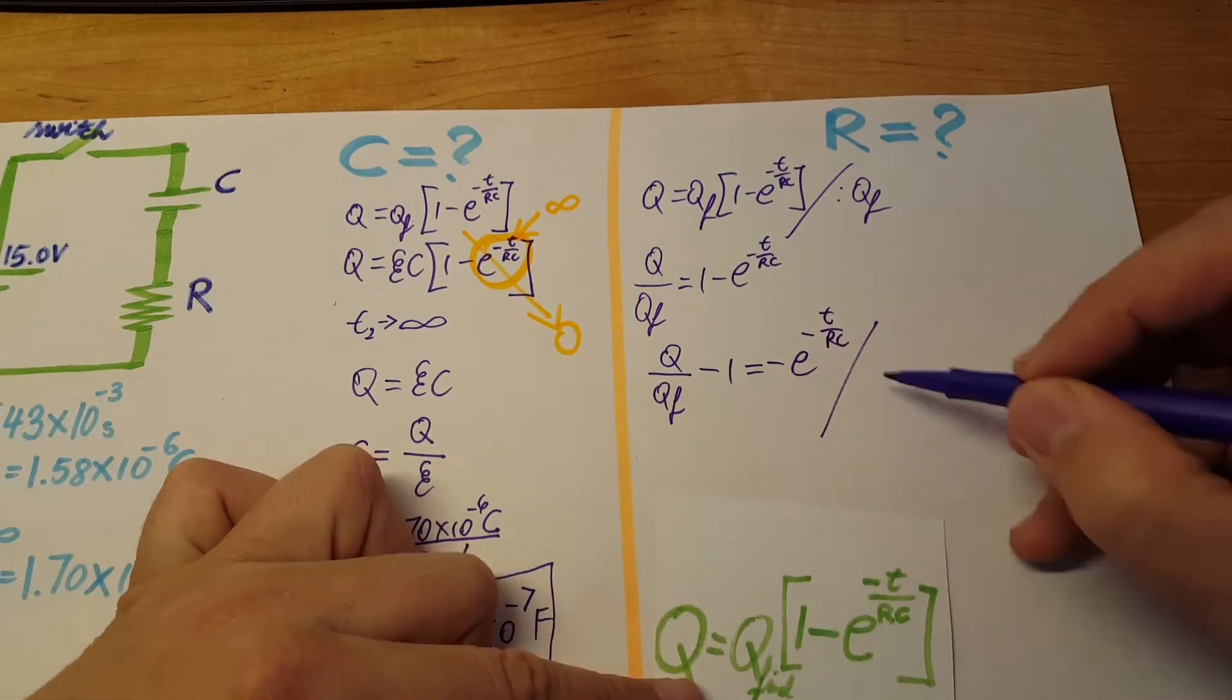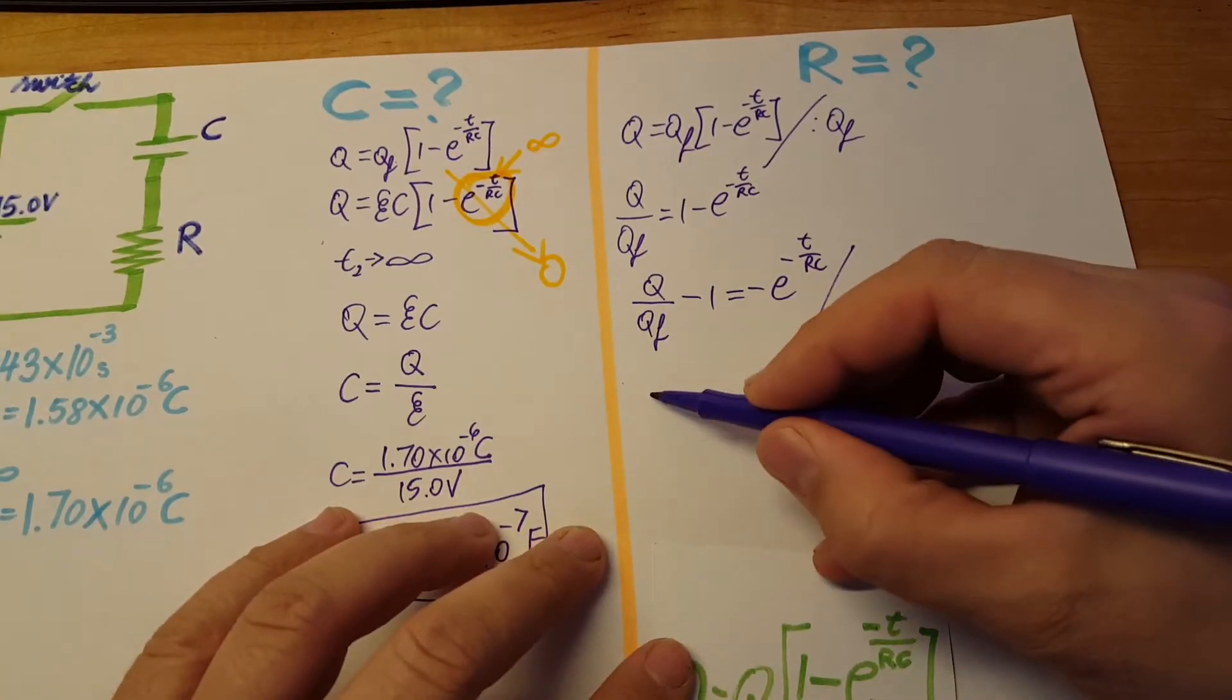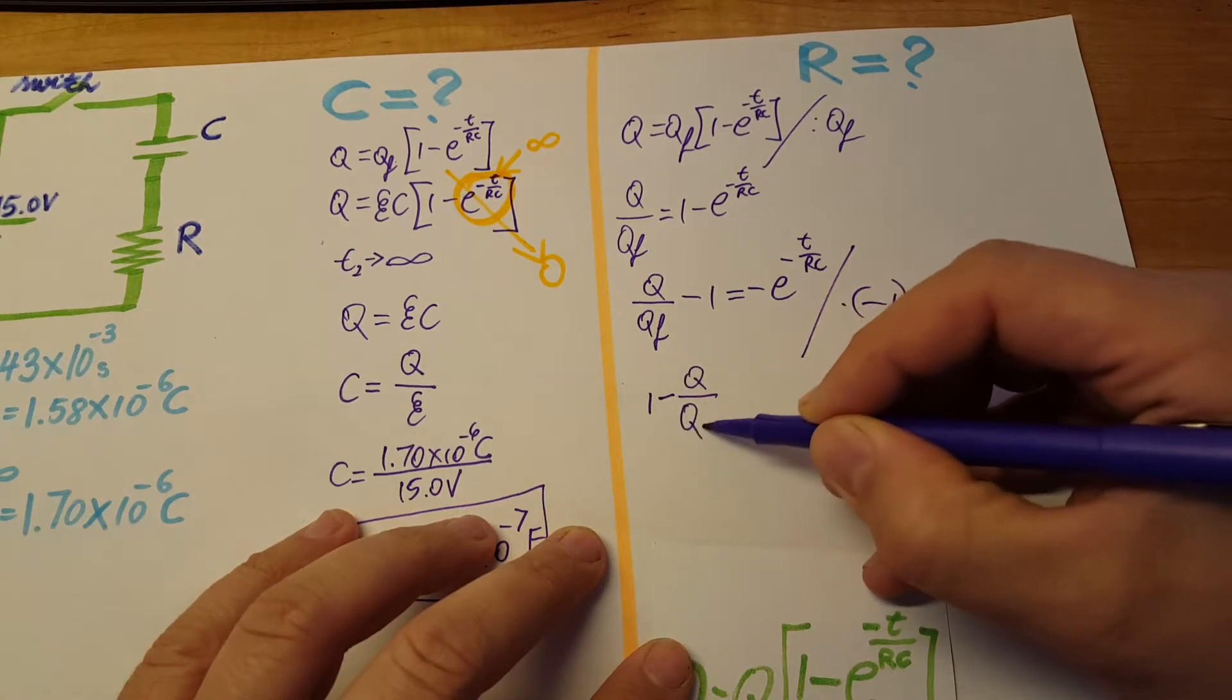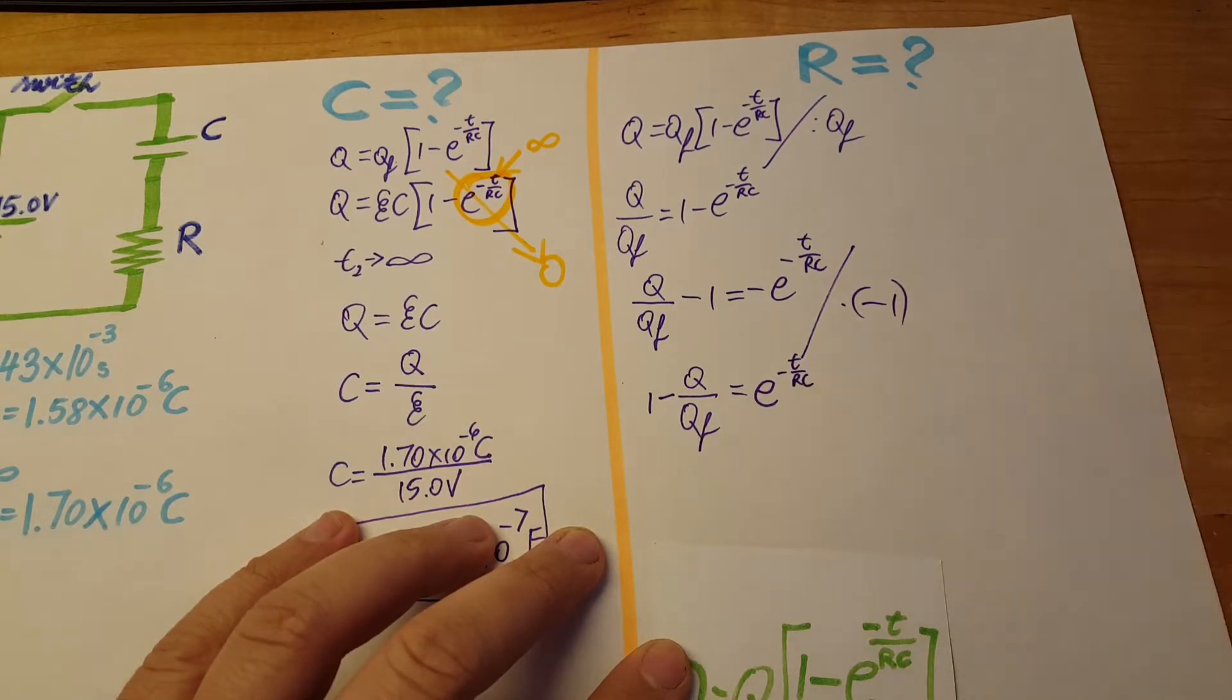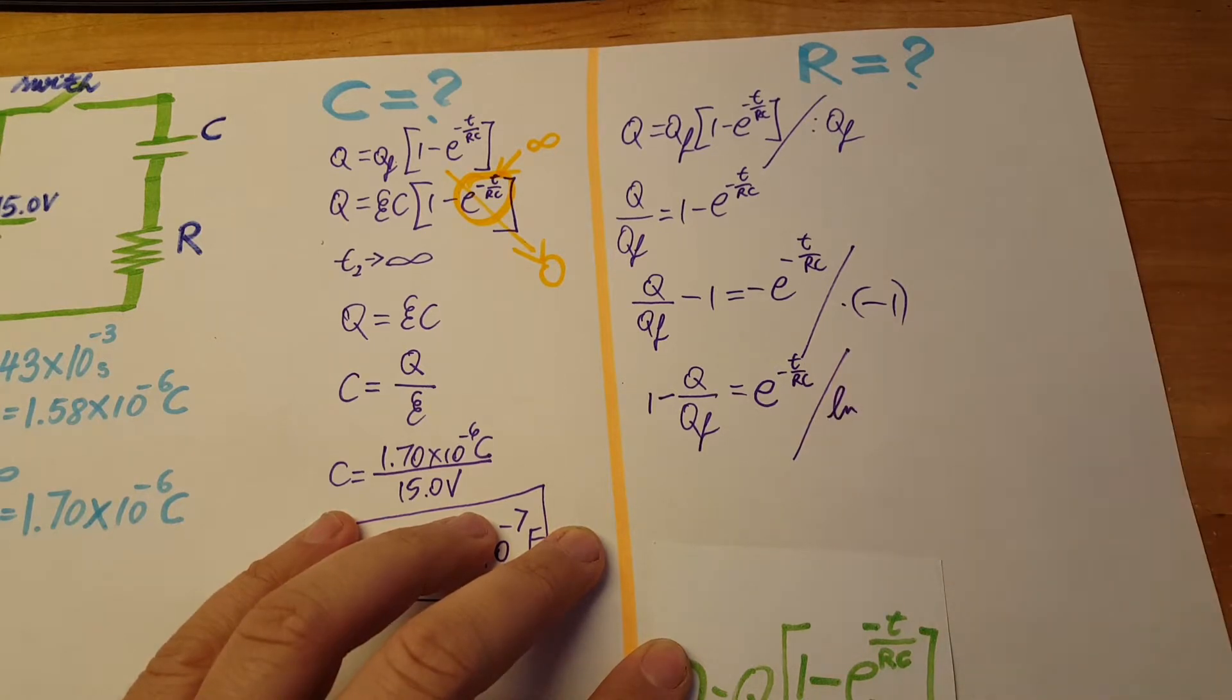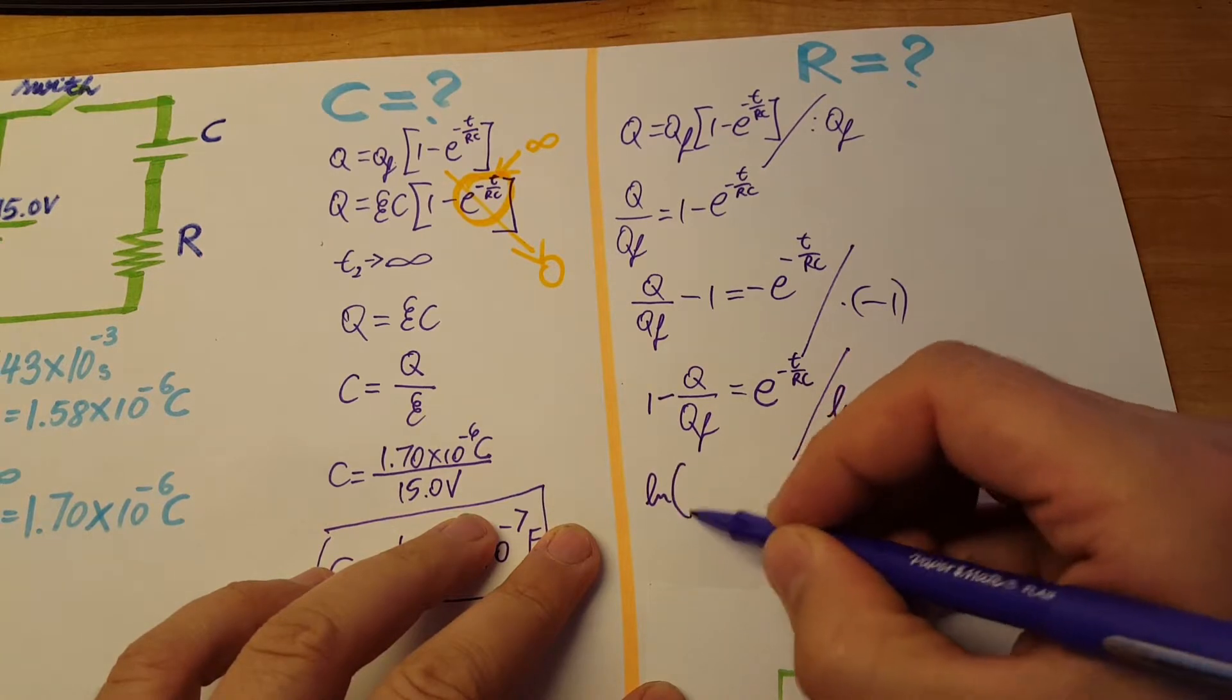Multiplying by negative one, that's gonna be one minus Q over Q final equals e to the negative t over RC.